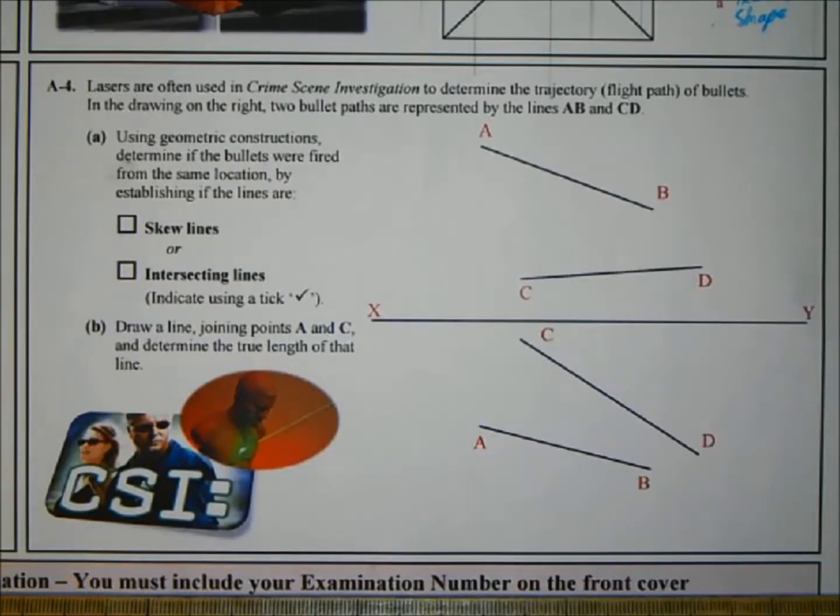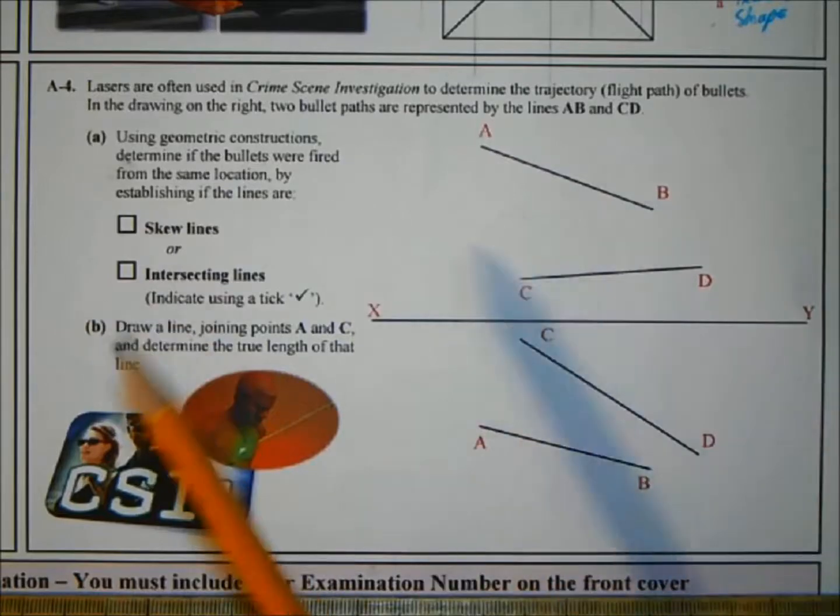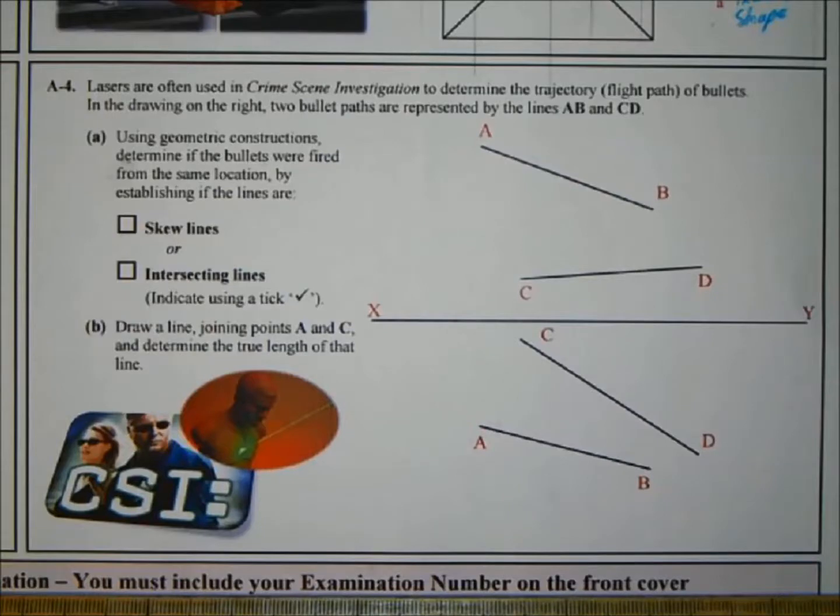Let's read through the question. Lasers are often used in crime scene investigation to determine the trajectory, i.e. flight path, of bullets. In the drawing on the right, two bullet paths are represented by the lines AB and CD.